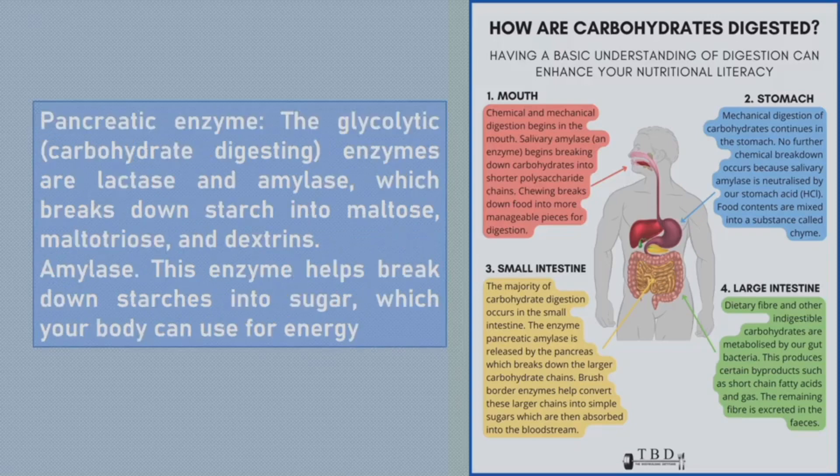3. Pancreatic enzymes: The glycolytic enzymes are lactase and amylase, which break down starch into maltose, maltose and dextrin. 4. Amylase: This enzyme helps break down starch into sugar, which your body can use for energy.